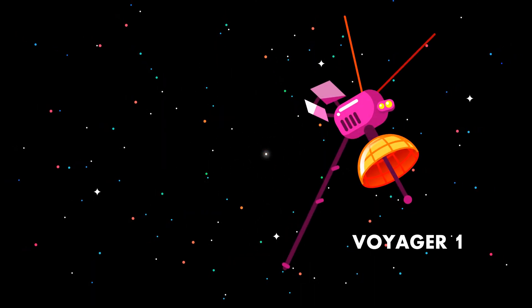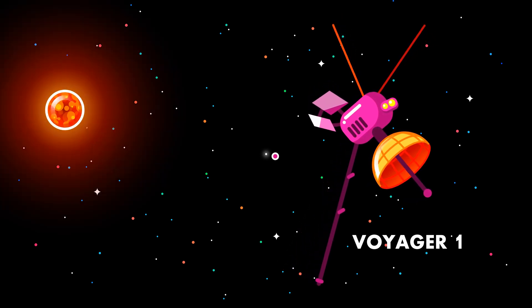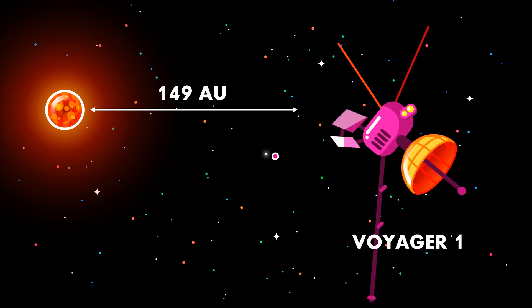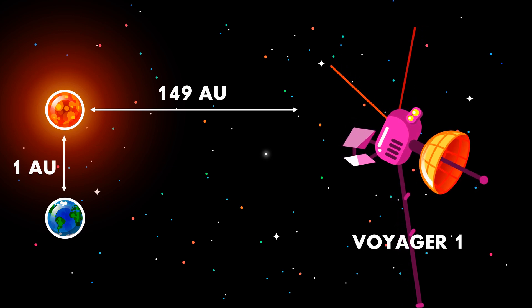The furthest humanity has ever come into space is the Voyager 1. This space probe is the first object that has left our solar system. It is located at 149 astral units from the sun. To give you an idea, the distance between the Earth and the sun is only one astral unit.